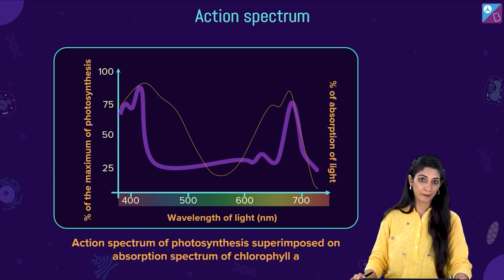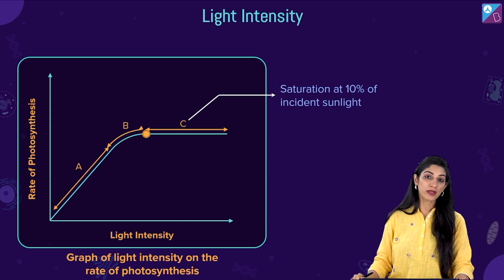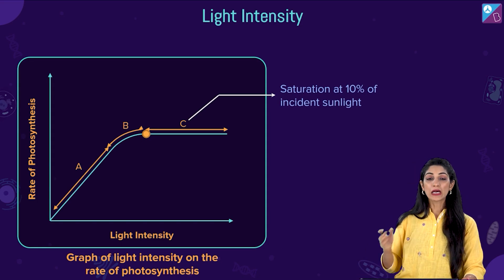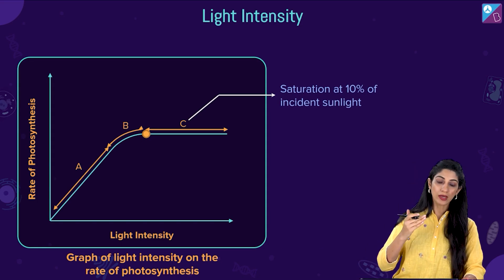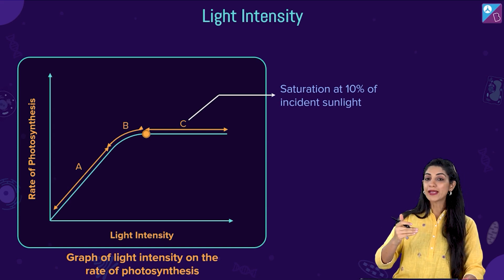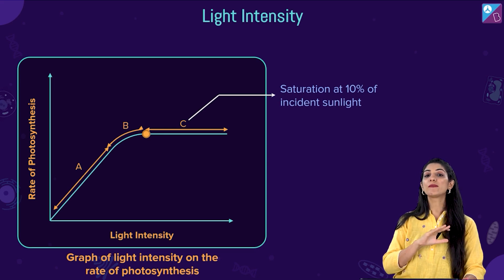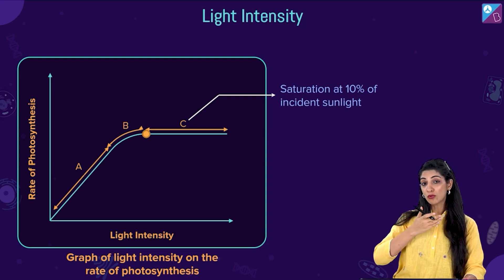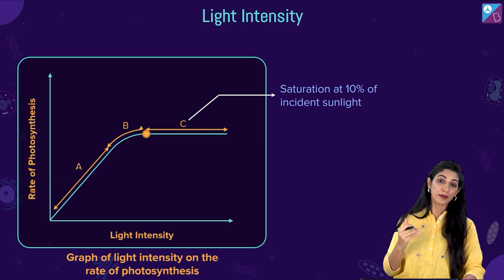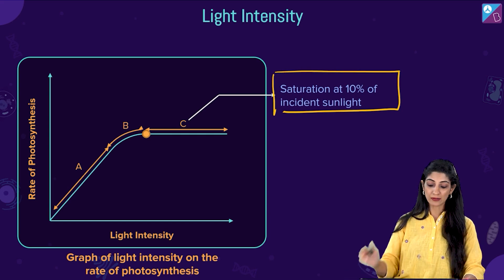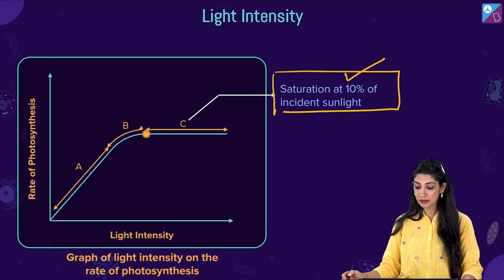The primary pigment is chlorophyll A. When we talk about factors affecting photosynthesis, for light intensity: if you increase the light intensity, initially the rate of photosynthesis increases, but after a point there is no further increase. That is why you get a hyperbola in this graph — not a straight line. Light saturation occurs at about 10% of incident light.